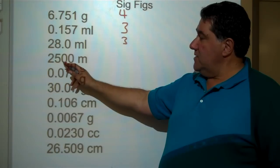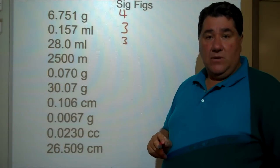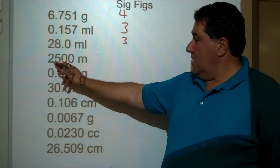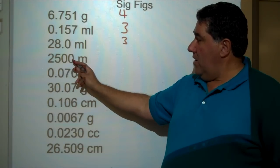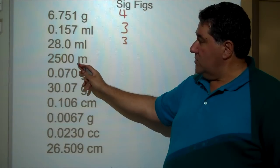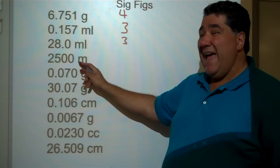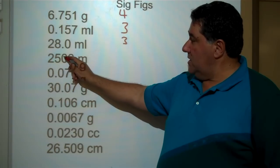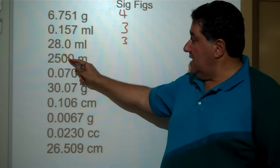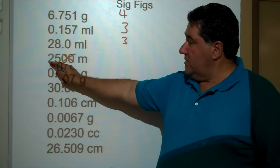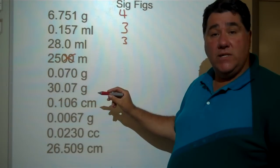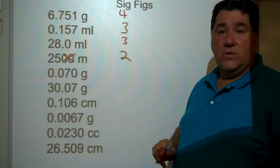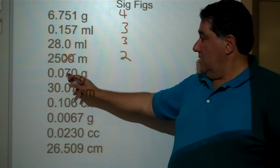The next one: 2,500 meters. There is no decimal point listed here — it's 2,500 with two trailing zeros. There's no zero after a decimal point, so these two zeros are not significant. Only the two and the five are significant, giving a total of two significant figures.